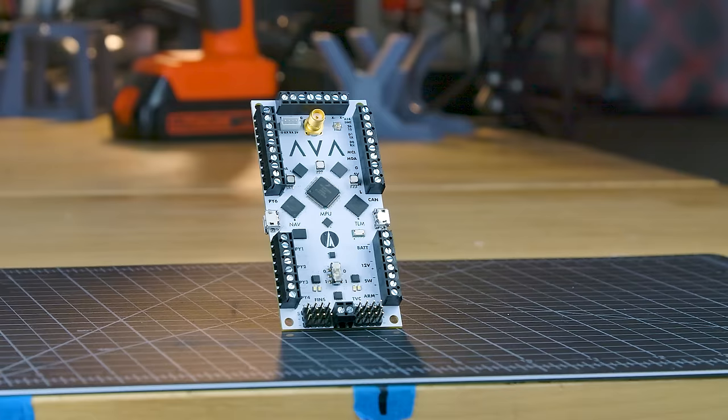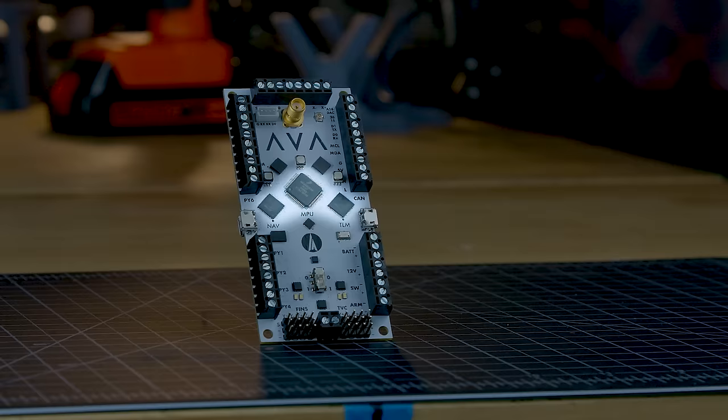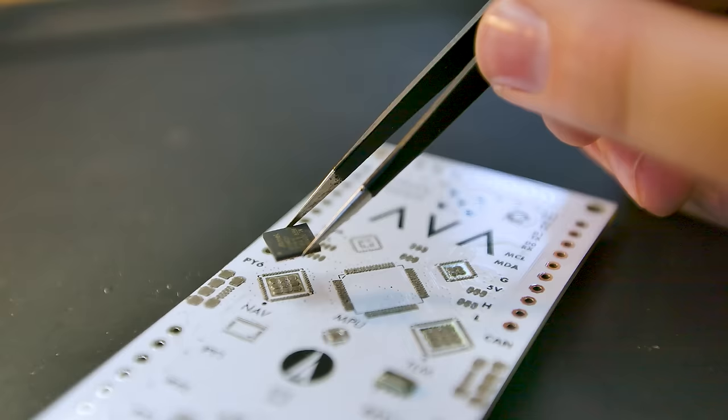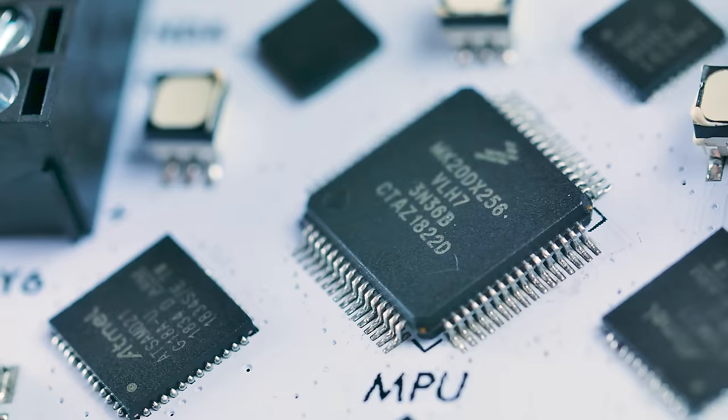First let's talk about the hardware, then we'll talk about the software. AVA uses three separate microcontrollers which can work together over I2C or SPI. On the left is the navigation computer, or NAV.